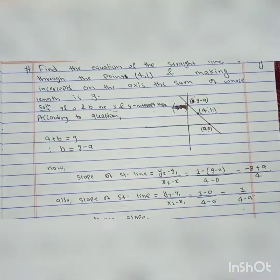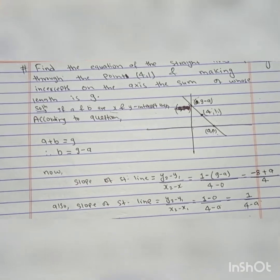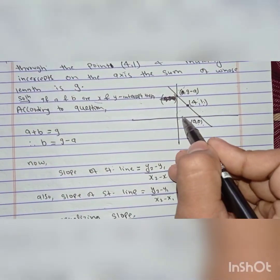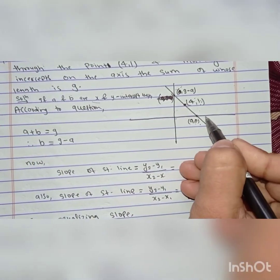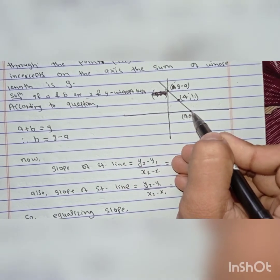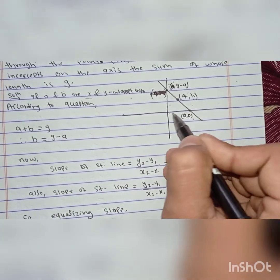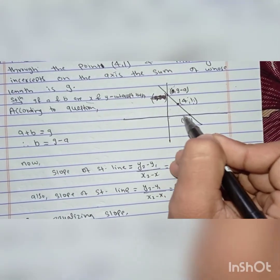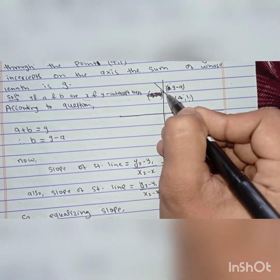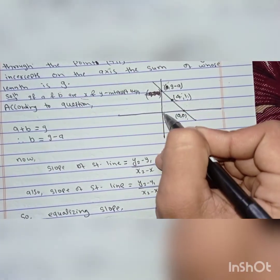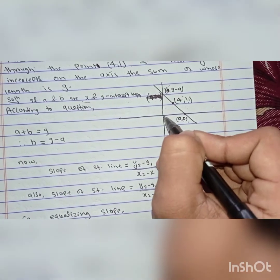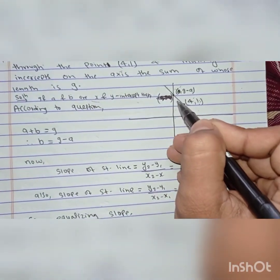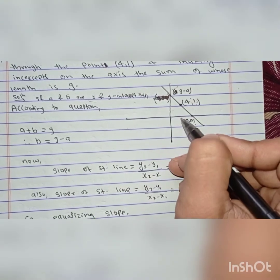Before solving this, we should know what an intercept is. An intercept is the distance from the origin to the point of intersection of a straight line and an axis. The x-intercept is this distance, and the y-intercept is this distance.